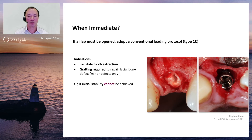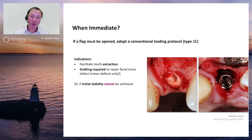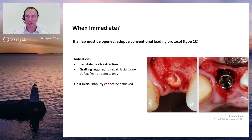Sometimes it is necessary to open a flap when placing an implant immediately — either to facilitate tooth extraction if access to the root is difficult, or if grafting is required to repair minor defects. In these cases, the implant should be submerged and not immediately loaded to maximize regenerative potential and avoid interfering with bone regeneration, particularly in the critical coronal region of the implant shoulder. If adequate initial stability cannot be achieved, the immediate restoration plan should be abandoned in favor of a conventional loading protocol.